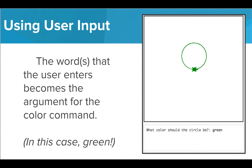When we run this code, the user will see the text prompt and will be able to type in an answer. The user's answer of green is given as an argument to the color command. Tracy then changes her color to green and draws the circle.